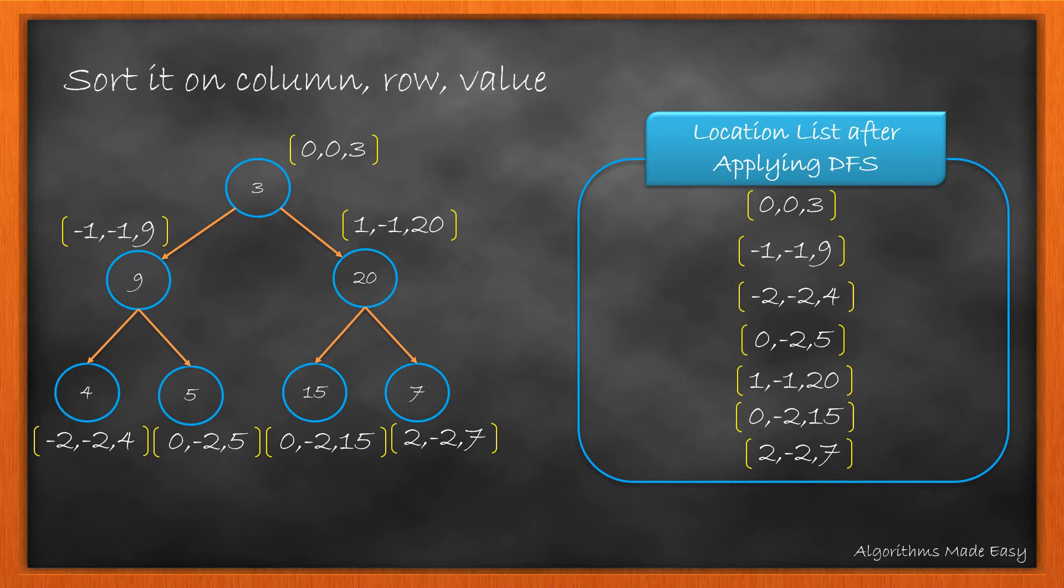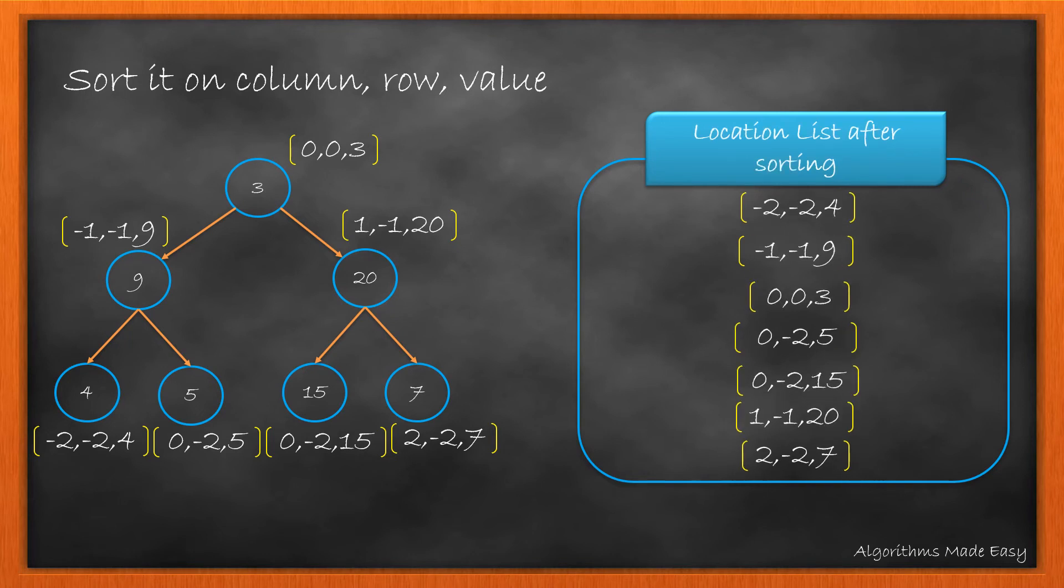Now, we would sort the list to obtain the data in correct order. After sorting, the location list will look like this. We have the data in correct order. Now, we just need to correct the format.